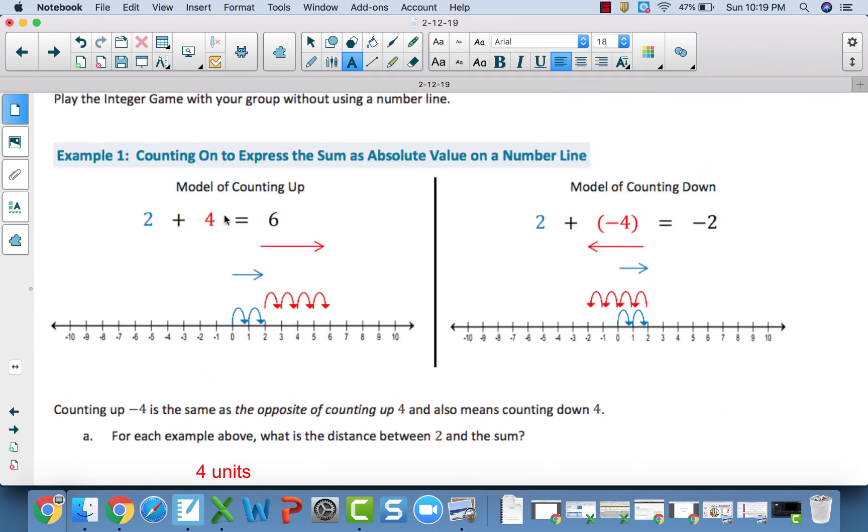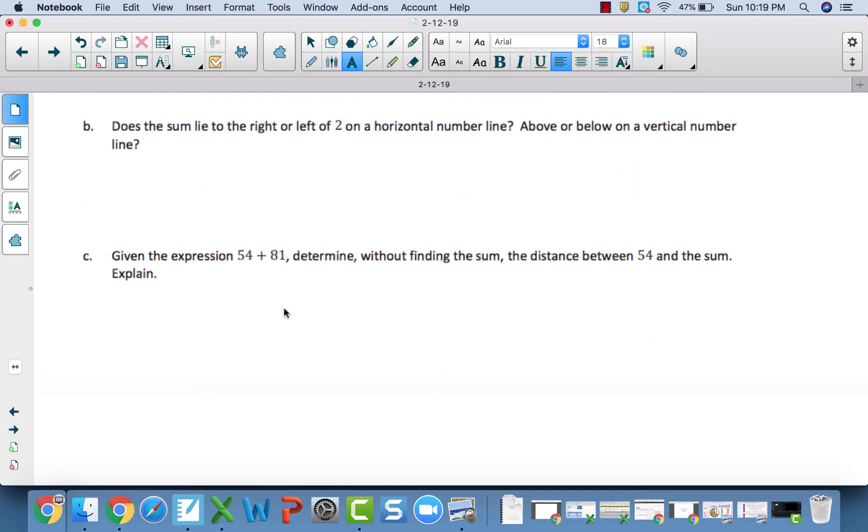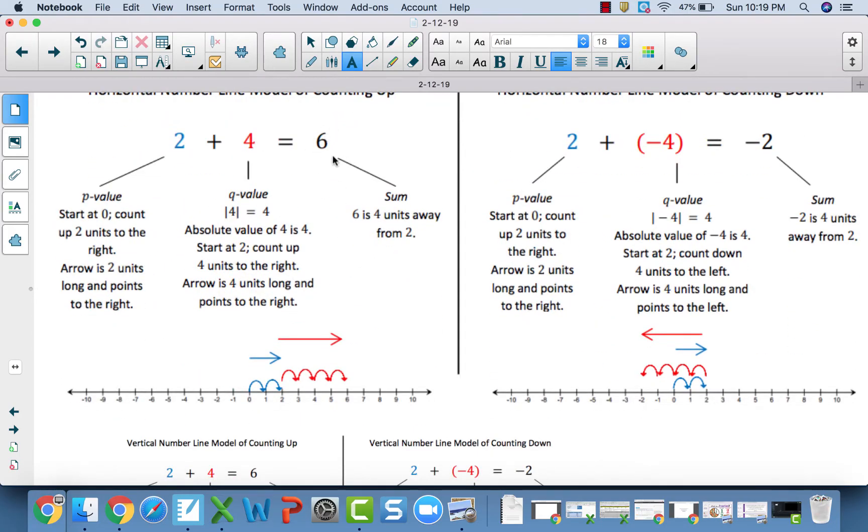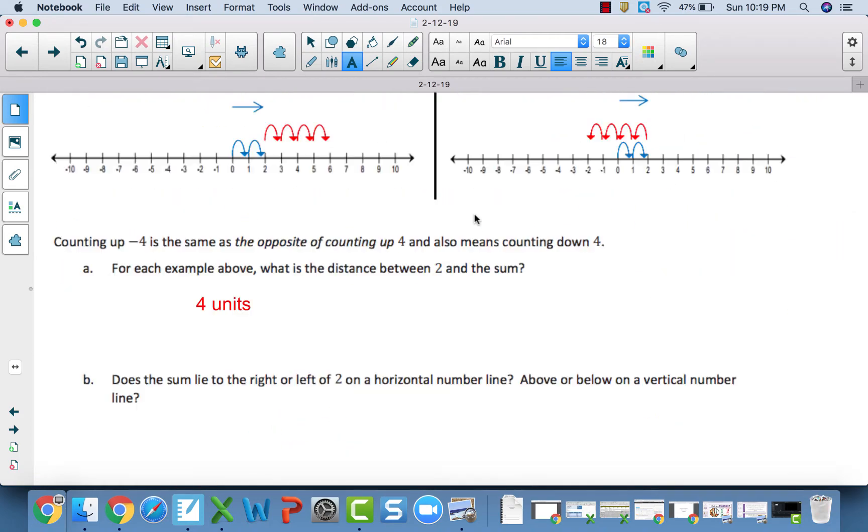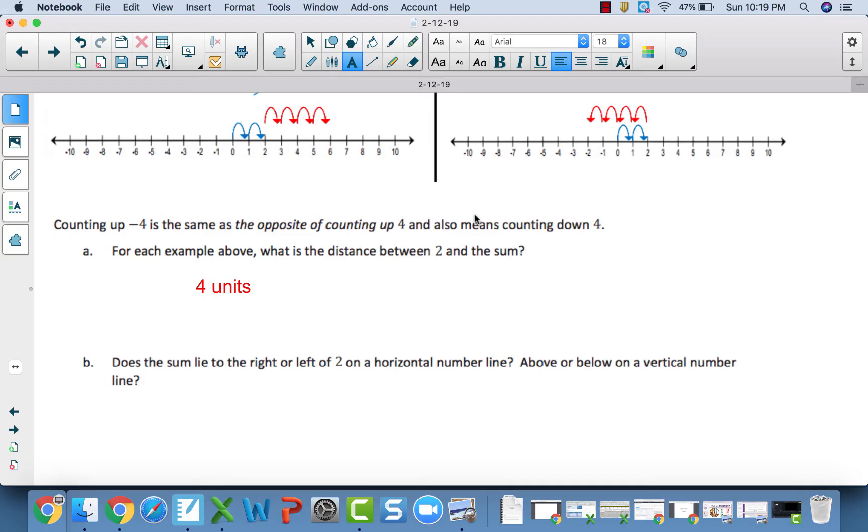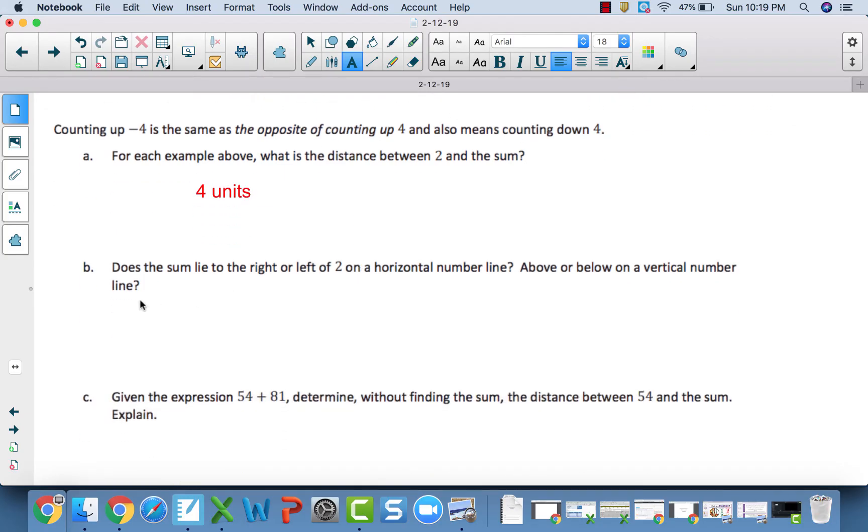All right, this, and if we better even go down here, 6 is 4 units away from 2, and negative 2 is 4 units away from 2. Now, does the sum lie to the right or the left of 2 on a horizontal number line and above or below on a vertical?